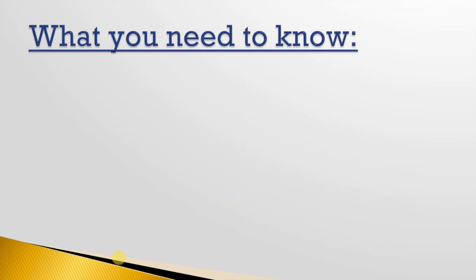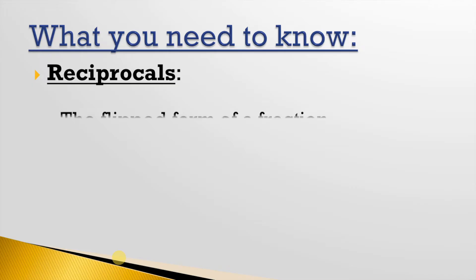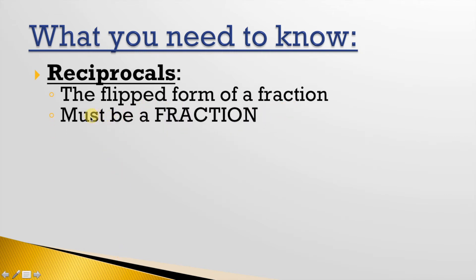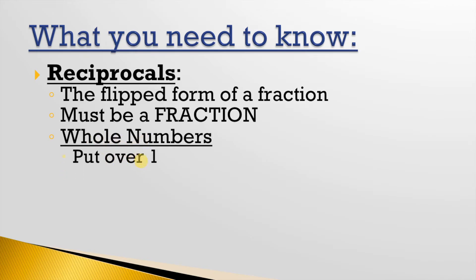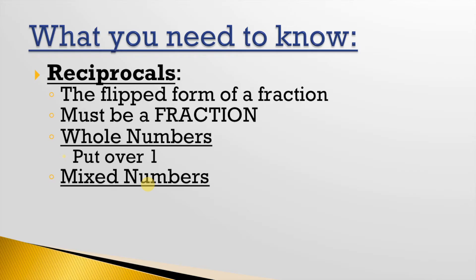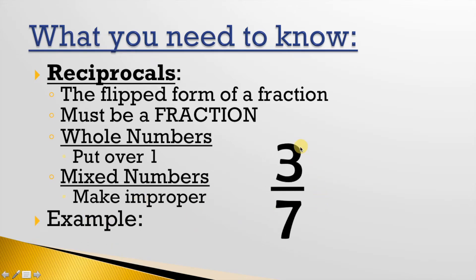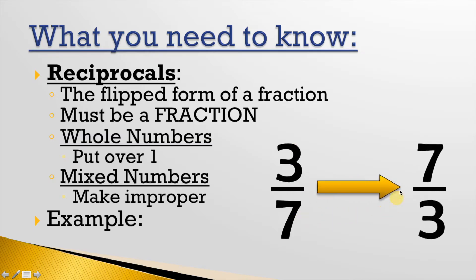So we've gone over some models to see exactly what's happening when we're talking about division. Now we're going to talk about how to calculate it mathematically. Before we do, we need to know what reciprocals are. It sounds like a really fancy word, but reciprocals aren't that hard to understand. Reciprocals are the flipped forms of a fraction — every reciprocal must be a fraction. Here we have 3 over 7. If I wanted to find the reciprocal of 3 over 7, I would just switch the 3 and the 7 to get 7 over 3.